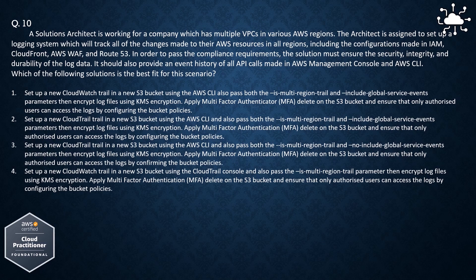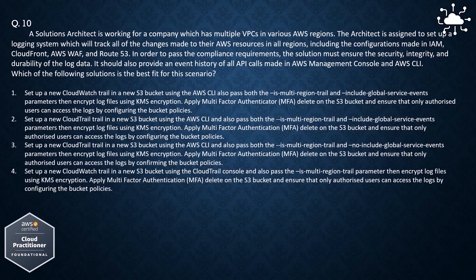Question 10. A solutions architect is working for a company which has multiple VPCs in various AWS regions. The architect is assigned to set up a logging system that will track all of the changes made to their AWS resources in all regions, including the configurations made in IAM, CloudFront, AWS WAF, and Route 53. In order to pass compliance requirements, the solution must ensure the security, integrity, and durability of the log data. It should also provide an event history of all API calls made in AWS Management Console and AWS CLI.